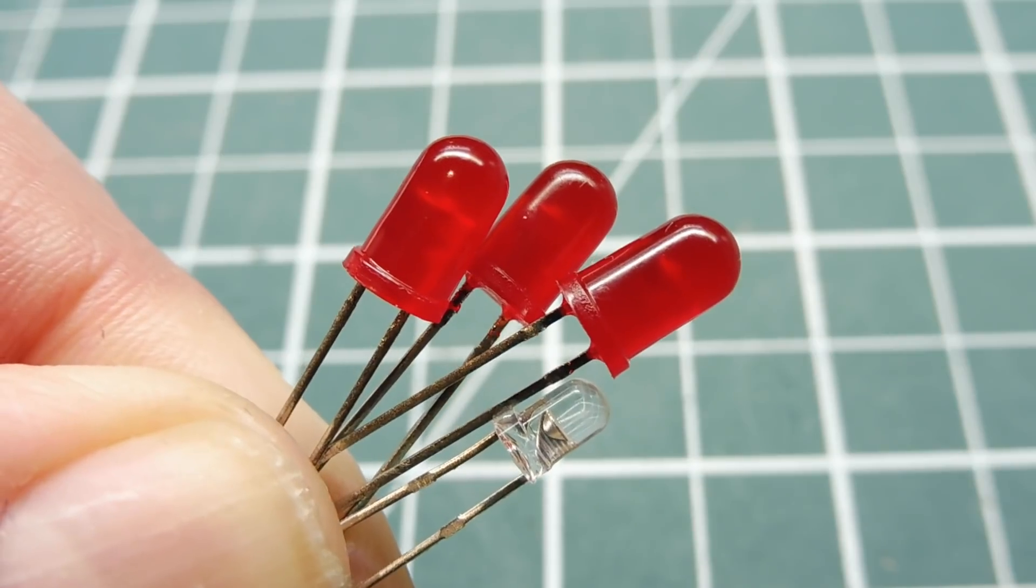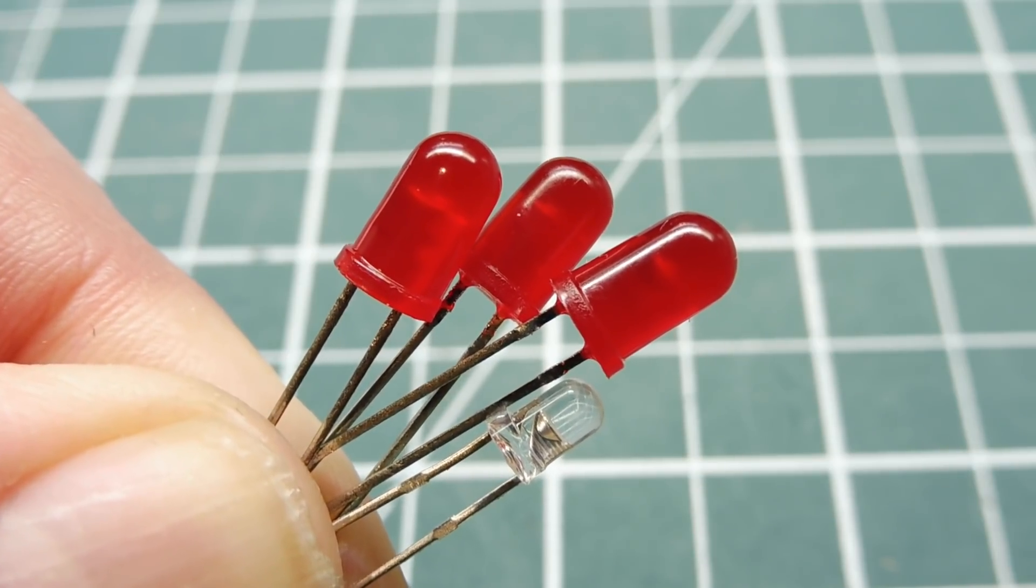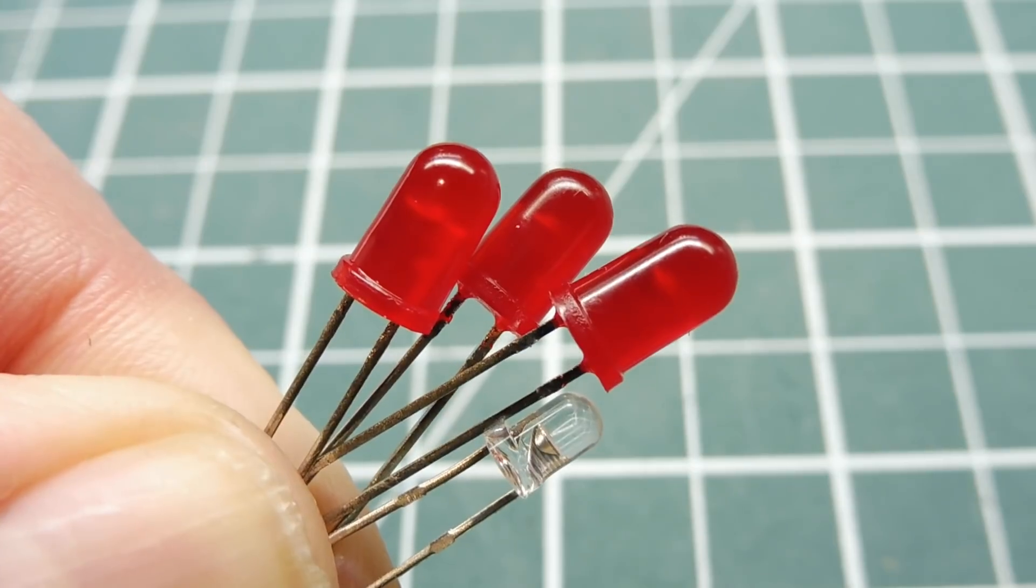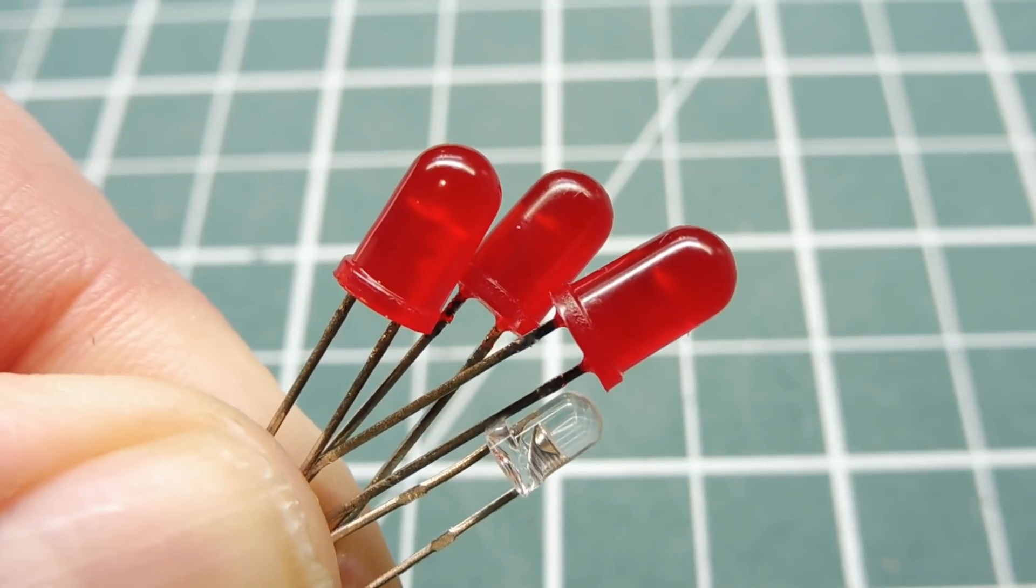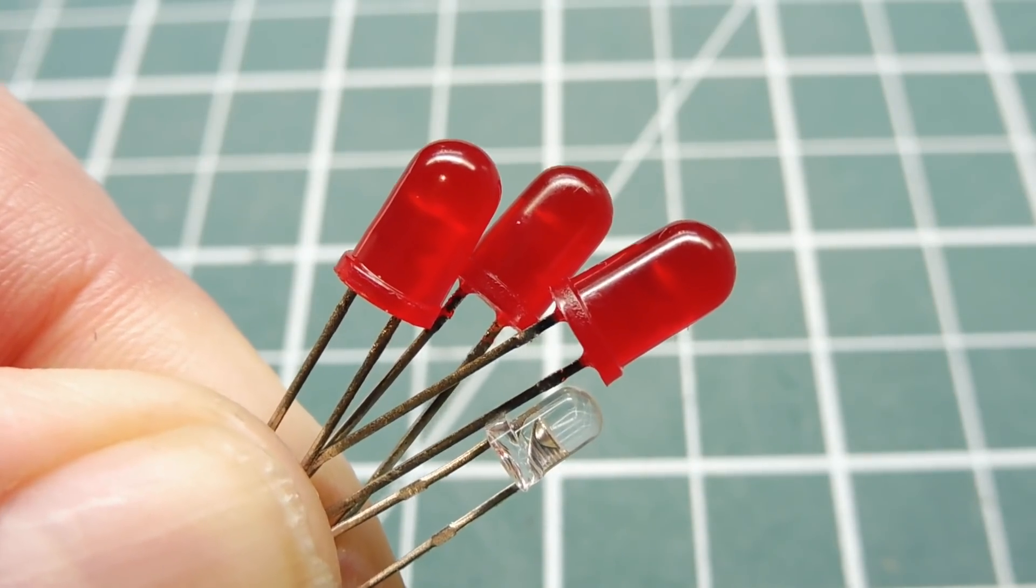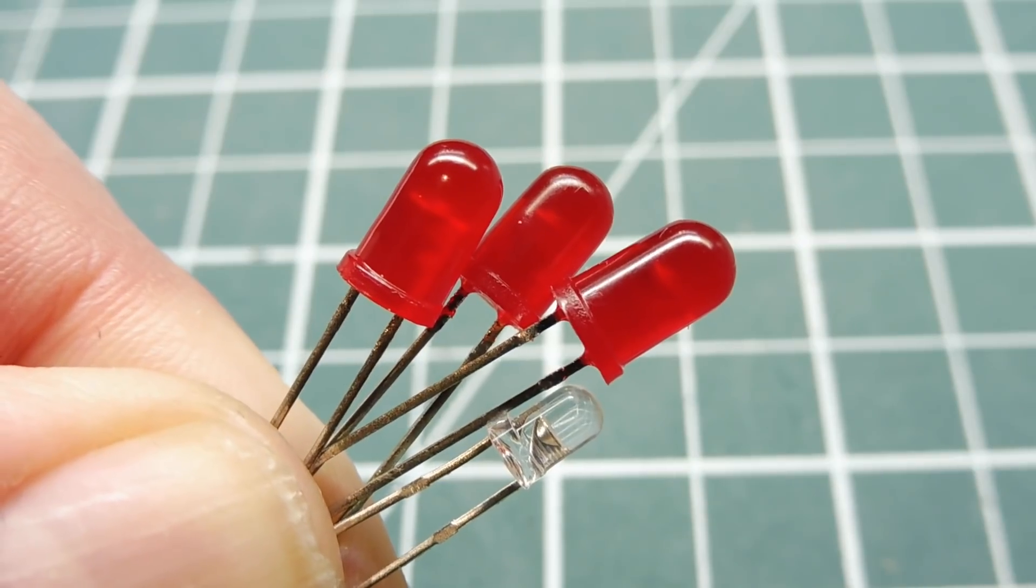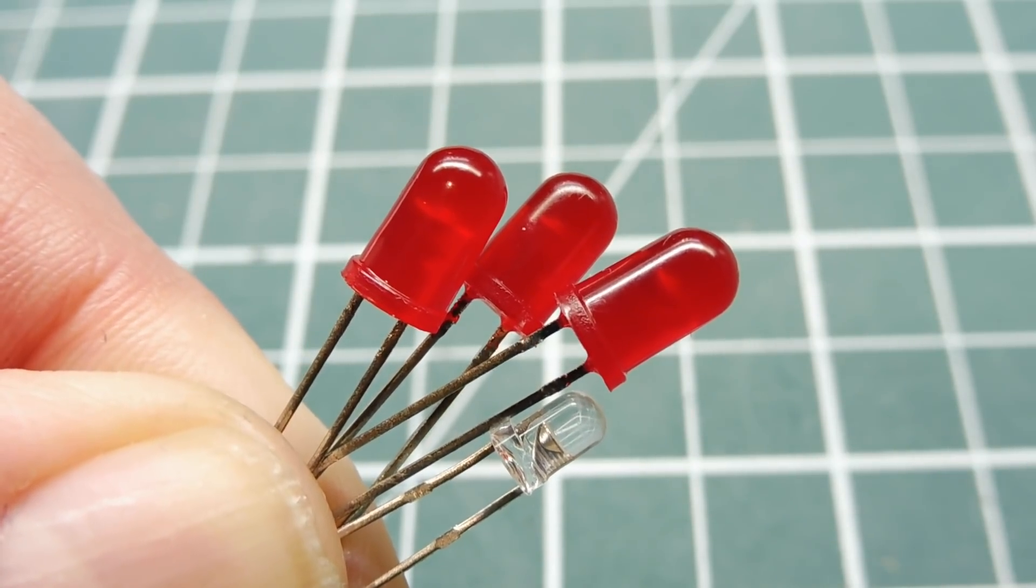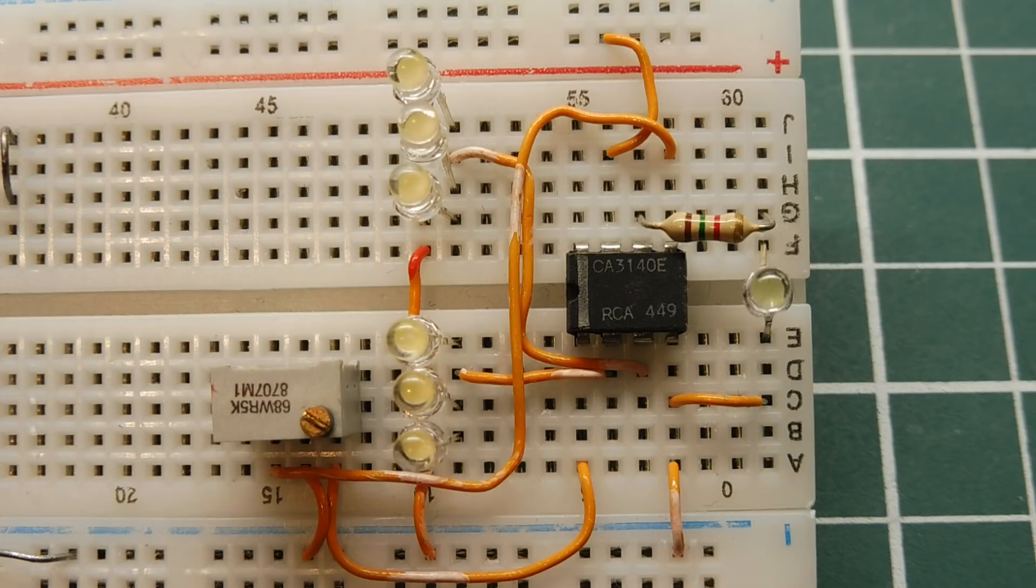Now when you apply a voltage across the LED, energy is released in the form of photons, which is light energy. Now if we apply photons to the LED, if we shine light on the LED, it will output a voltage, so it works in reverse. So by using this characteristic, we could build a light detection circuit using an LED.